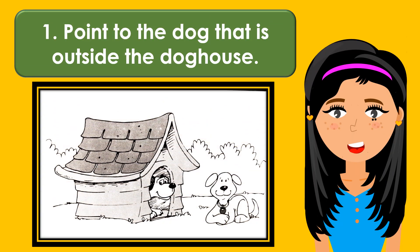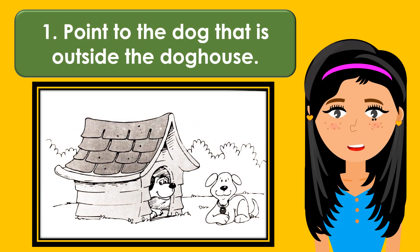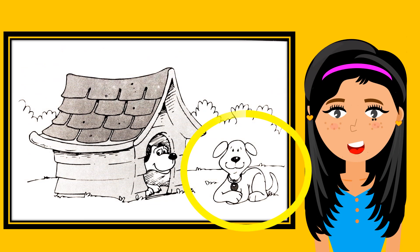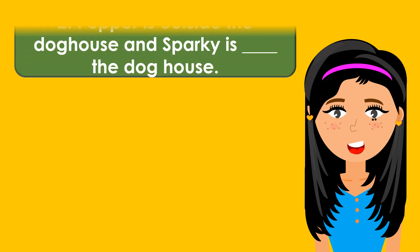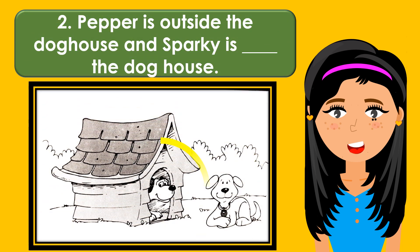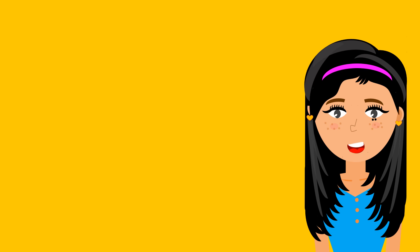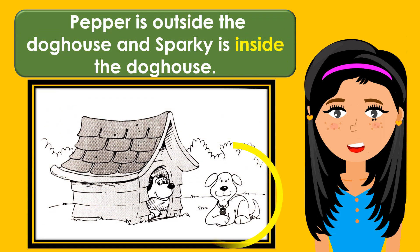Point to the dog that is outside the doghouse. Pepper is outside the doghouse, and Sparky is blank the doghouse. The missing word is inside. Pepper is outside the doghouse, and Sparky is inside the doghouse.